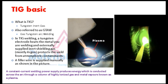To use this process, an arc is established between a non-consumable tungsten electrode and the base metal, which is called the workpiece. Under the correct welding conditions, the electrode does not melt, although the workpiece does in the spot where the arc impacts its surface and produces a molten weld pool.